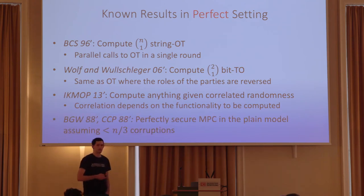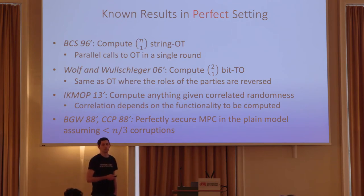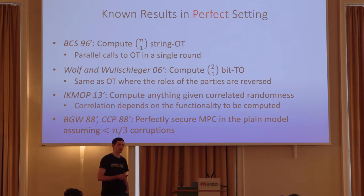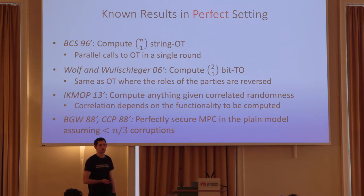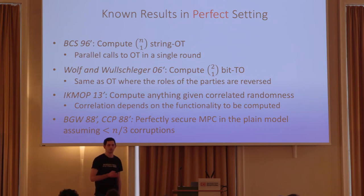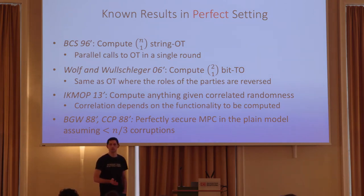We also have a classical result in the multi-party setting: the BGW and CCP protocols show that any multi-party functionality can be computed with perfect security in the plain model, assuming the adversary corrupts strictly less than one-third of the parties. And basically, that's all we know in the perfect setting.